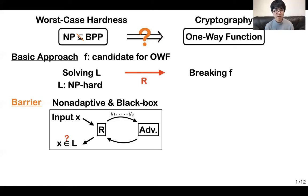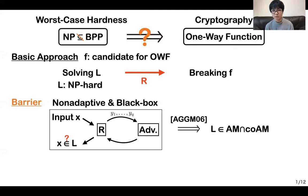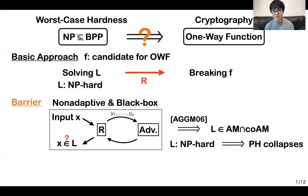Unfortunately, previous work showed that if we can get such a reduction for this problem, then we can show L is contained in AM intersect co-AM. And if L is an NP-hard problem, then this implies the collapse of the polynomial hierarchy. So under a very reasonable assumption on the polynomial hierarchy, we can exclude such an attempt.